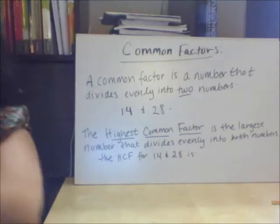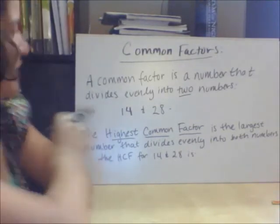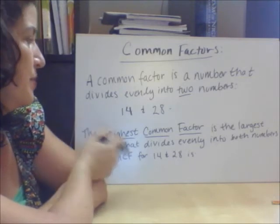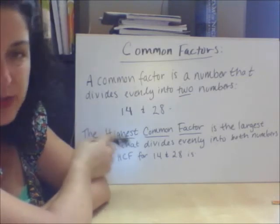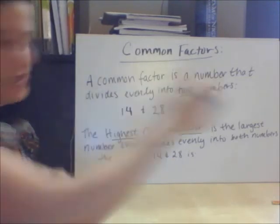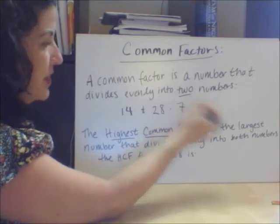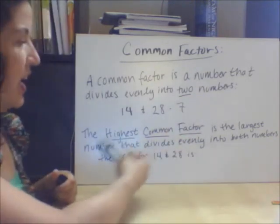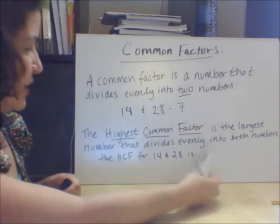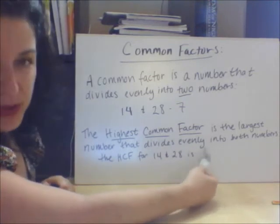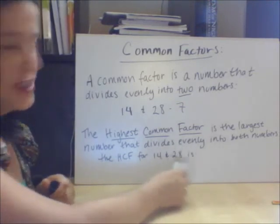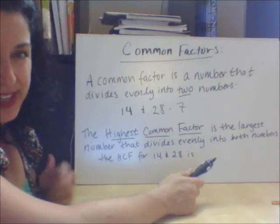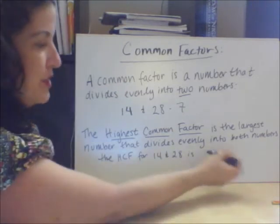Now, common factors. A common factor is a number that divides evenly into two numbers. For example, 14 and 28 can both be divided by 7. But the highest common factor is the largest number that divides evenly into both of those numbers. If you look at 14 and 28 again, there's an even bigger number they can both be divided by, and that number is 14.